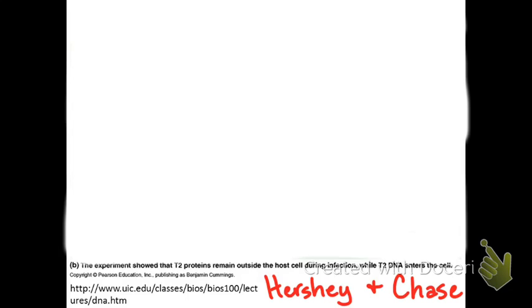And for a long time, protein was favored because it had 20 monomers, those were the amino acids, rather than the four simple nucleotides. We understood these molecules from a chemical standpoint before we understood them from a biological standpoint.